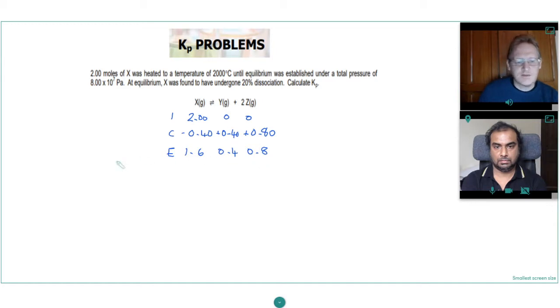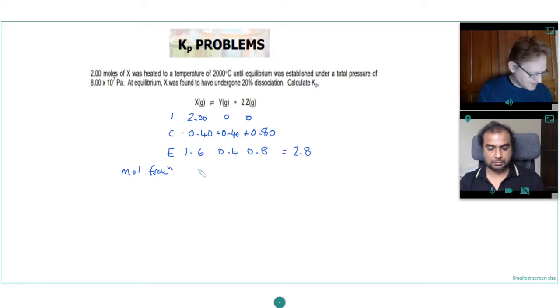And then there's just two more steps to do now. We've got the mole fraction, which is the number of moles at equilibrium divided by the total moles at equilibrium. So if we work out the total moles: 1.6 plus 0.4 is 2, plus 0.8 is 2.8. And so our mole fraction for X is 1.6 divided by 2.8, which is 0.5714.